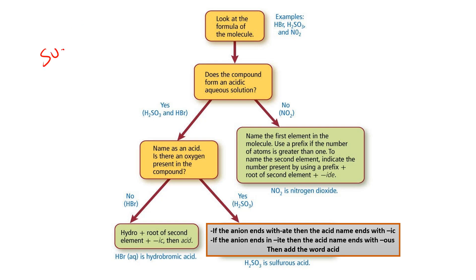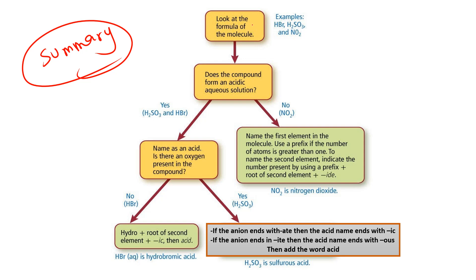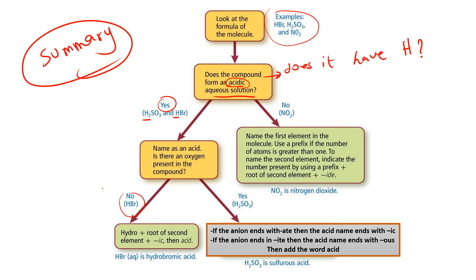Here is a summary of how to name covalent compounds. First, look at the formula — does the compound form an acidic solution? Does it have hydrogen? If yes, apply the acid rules: binary acid rules or oxy acid rules. If no hydrogen, apply the binary molecular compound rules: write the first element name, write the second element name with -IDE, and show the number of atoms using mono, di, tri, tetra, and so on.